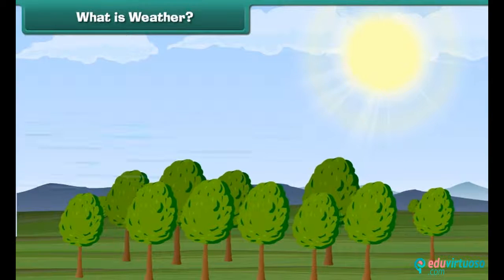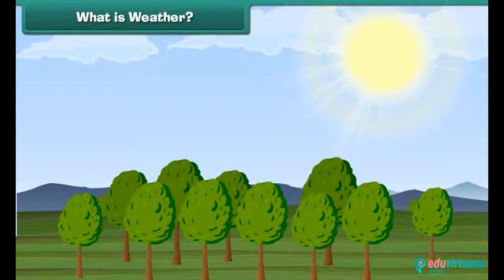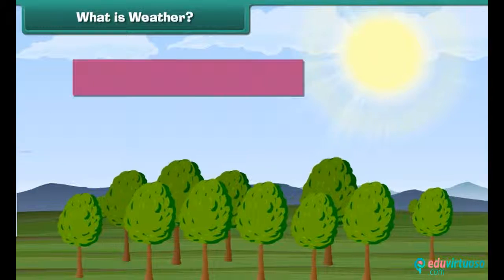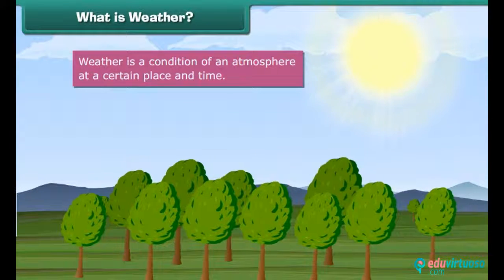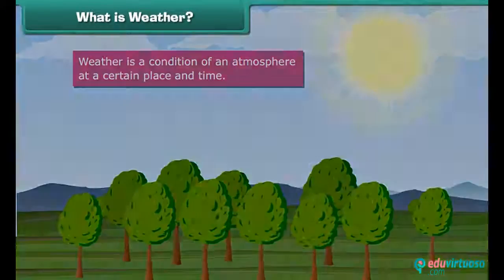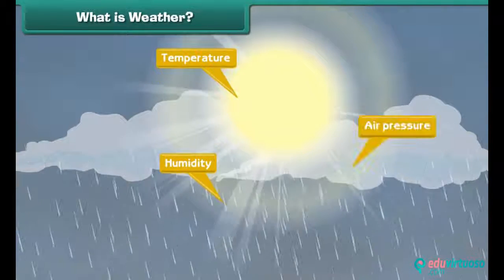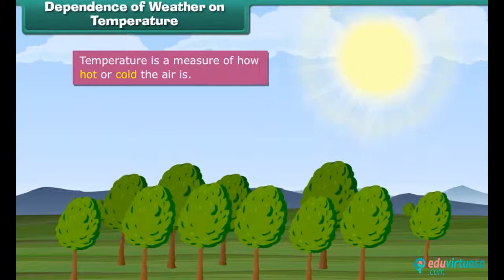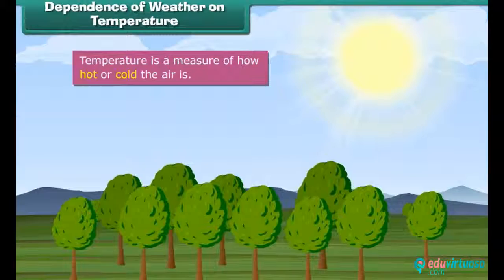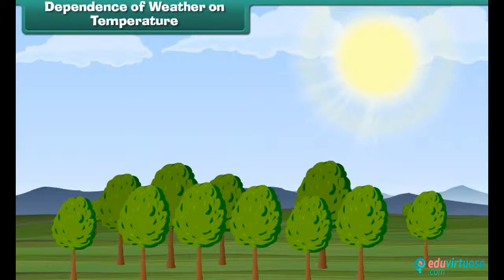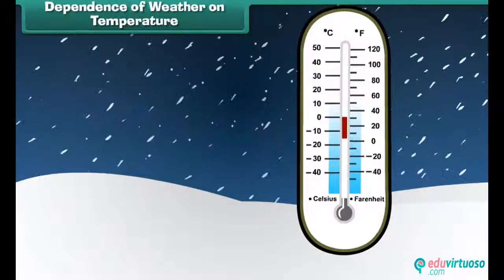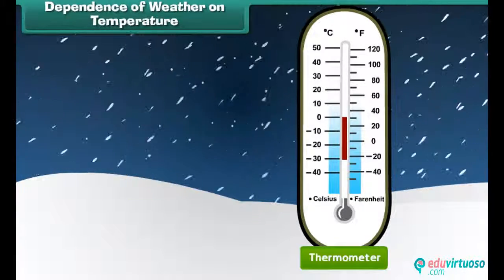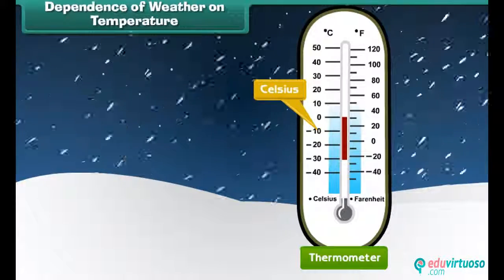Did you check today's weather forecast? What is weather? Basically, weather is a condition of an atmosphere at a certain place and time. The weather depends on many factors such as temperature, humidity, and air pressure. We all know that temperature is a measure of how hot or cold the air is. It depends upon the energy it receives from the sun. Temperature is measured with a device called a thermometer and is calculated in degrees Celsius and degrees Fahrenheit.